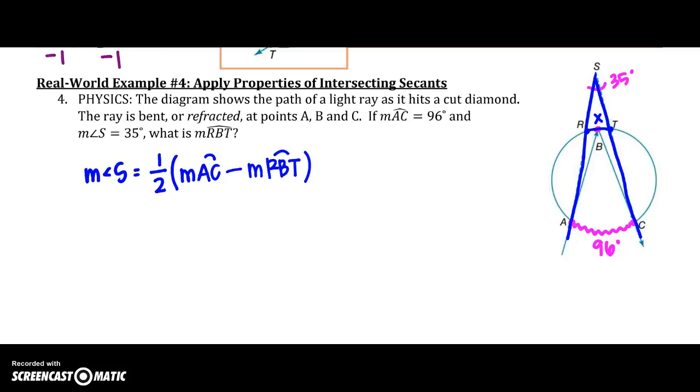So let's plug those numbers in. Angle S is 35 degrees equals one half of AC, which is 96 minus, we'll call that X so we don't have to rewrite it. Multiplying both sides by 2, I would get 70 equals 96 minus X.